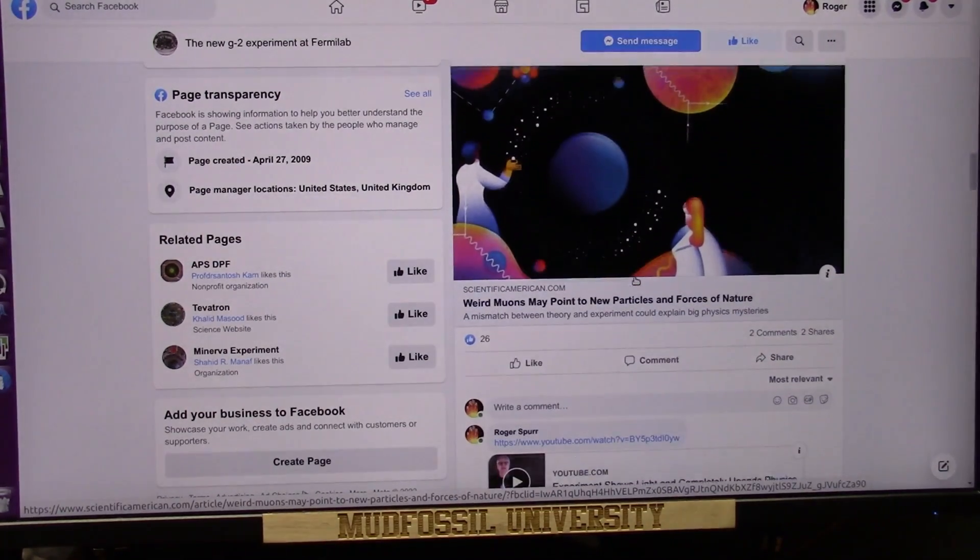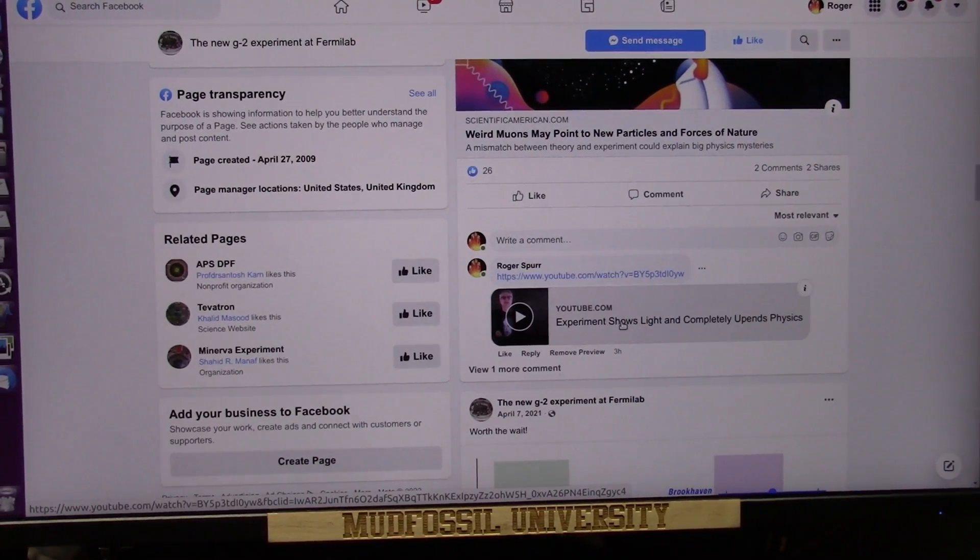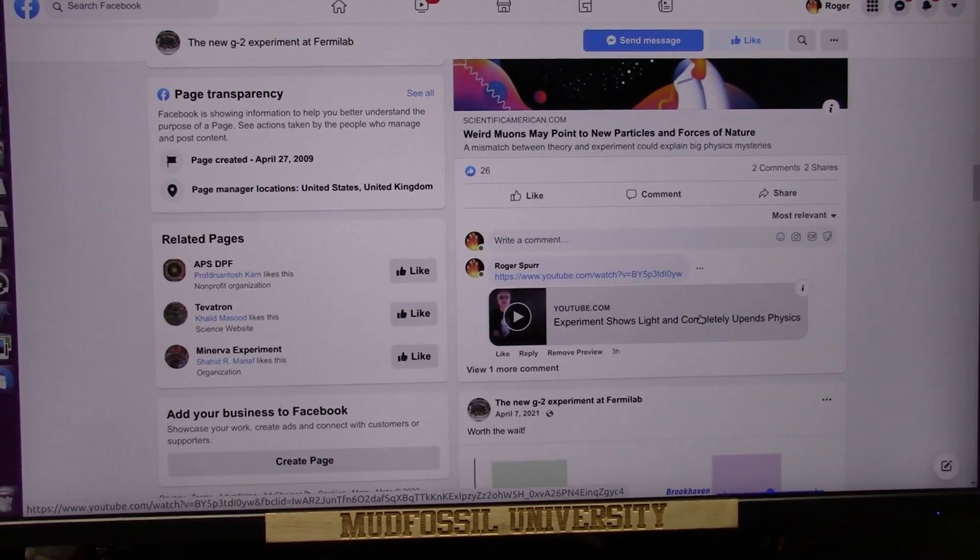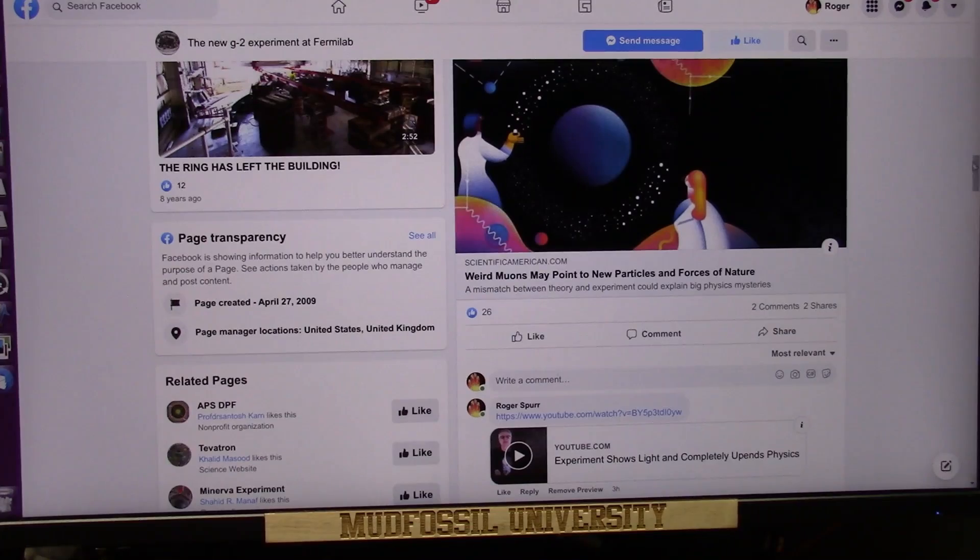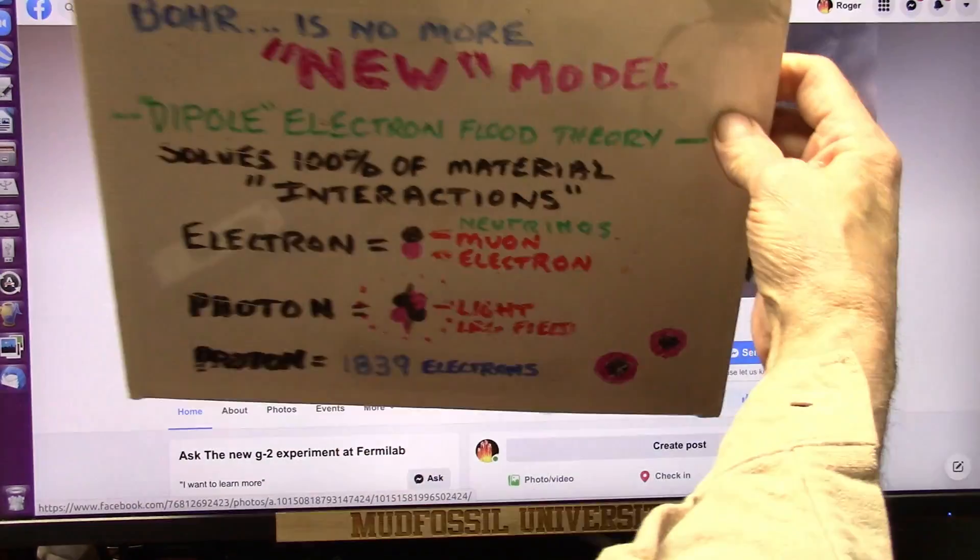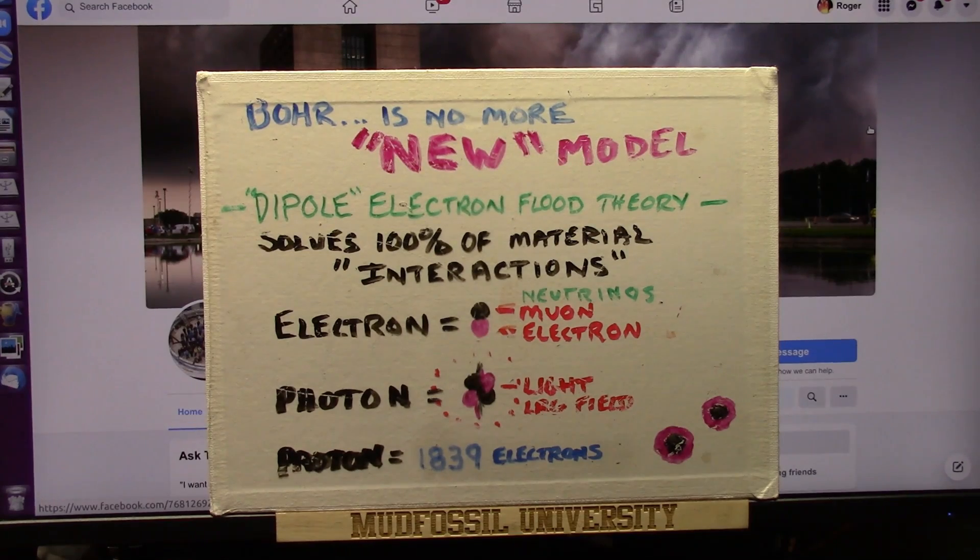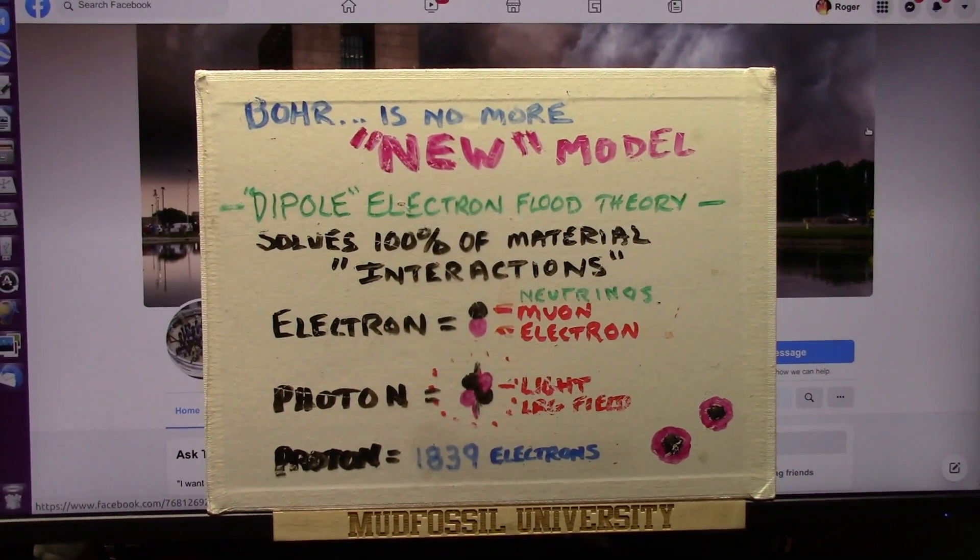It seems I'm the only one here because that's the only thing that shows up is my stuff, and I experiment showing light is completely upends physics, and it does because the Bohr model doesn't work. They know this for years now, but they had no way to replace it. Well, electron flood theory replaces it. That's it right there, and I'm going to show you these particles, and then I'm going to leave it at that because this is the biggest discovery in recent history as far as physics goes.